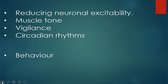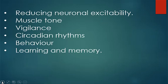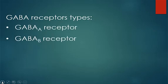The GABA receptors have been divided into three main types: GABA-A receptor, GABA-B receptor, and GABA-C receptor.